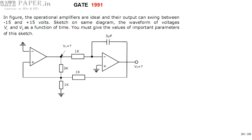Hello, we are discussing the GATE 1991 ECE paper and this question is related to analog circuits. Look at the circuit diagram — the operational amplifiers are ideal and their output can swing from minus 15 to plus 15 volts. We are going to draw the waveforms for V1 and V2 as a function of time.